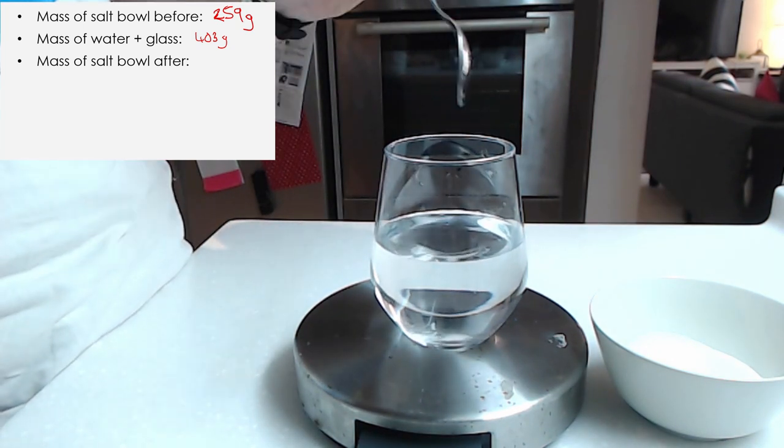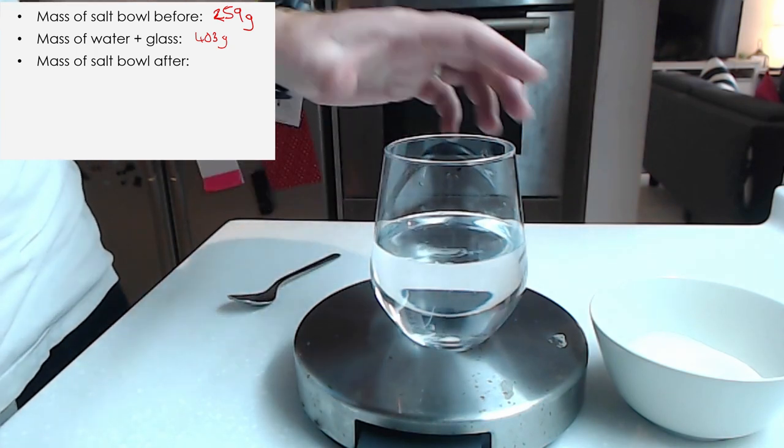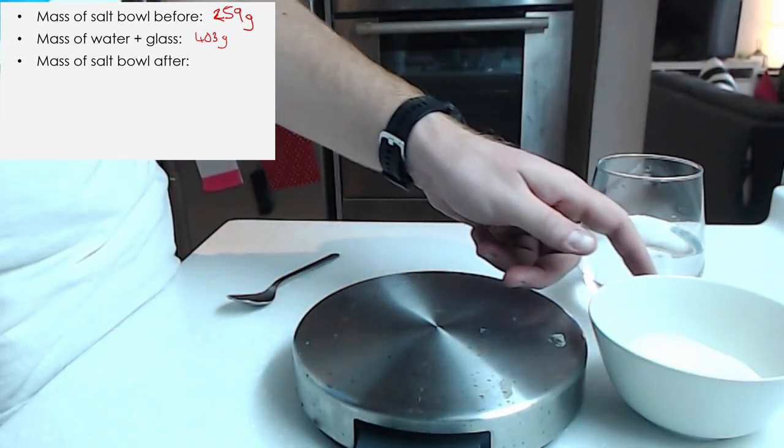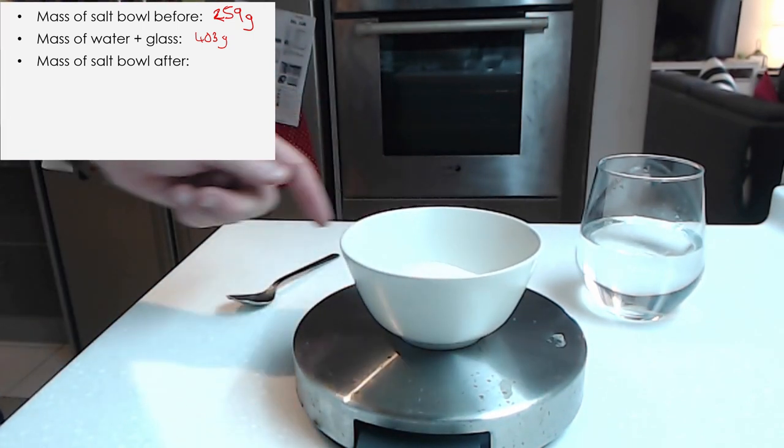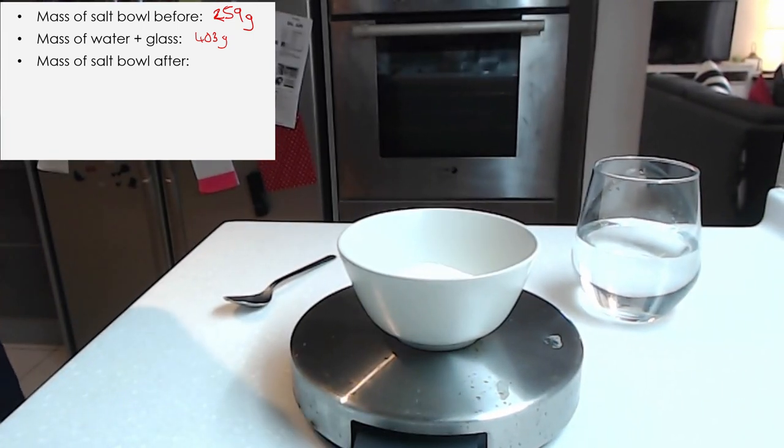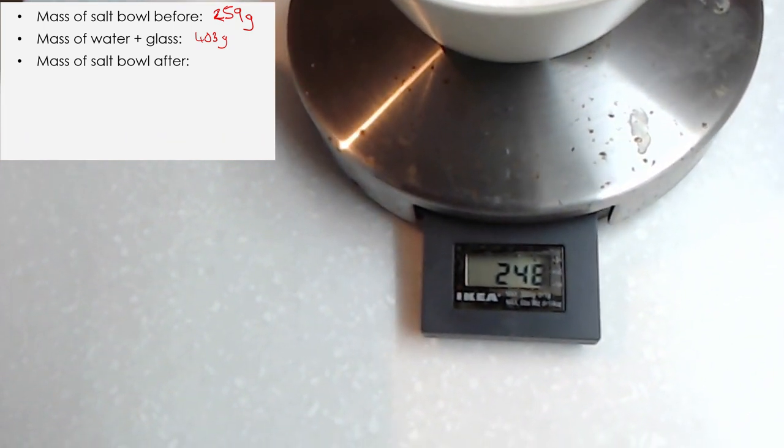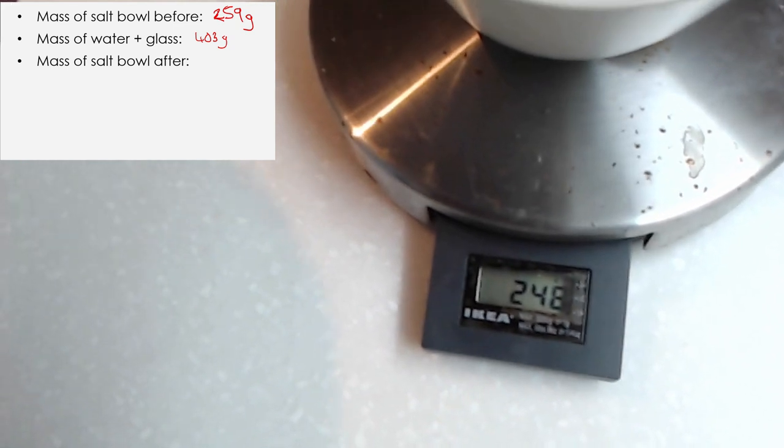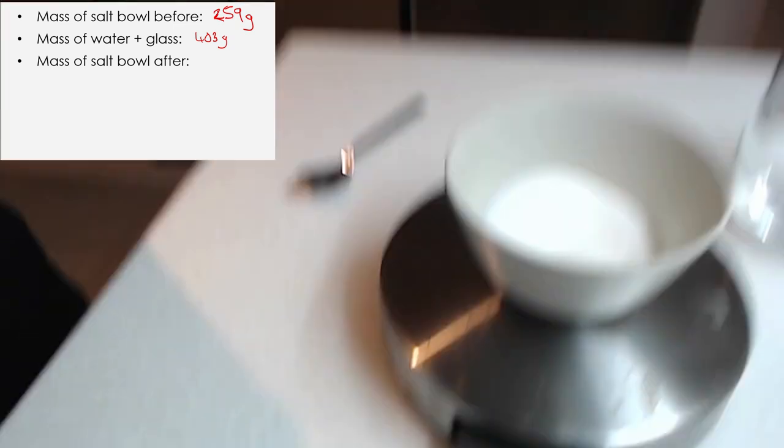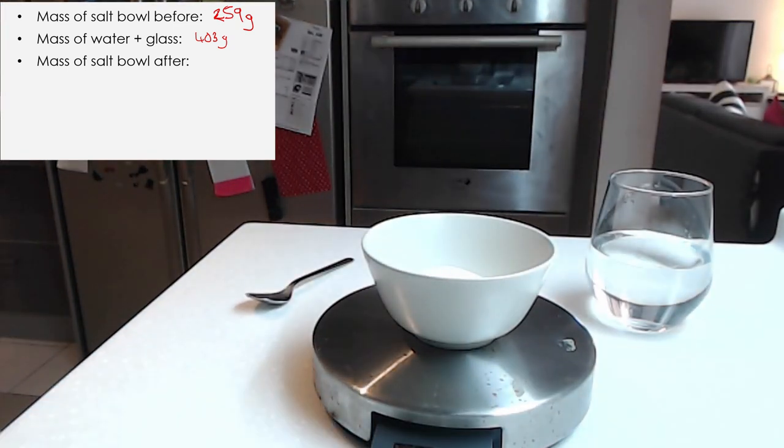Okay, I don't want to lose any drops because that will affect my experiment. So I asked for the mass of the salt bowl after I've added it. And if you have a look, it now says 248 grams. I'm not sure if you can see the 8 clearly on there, but that is an 8. 2, 4, 8 grams.